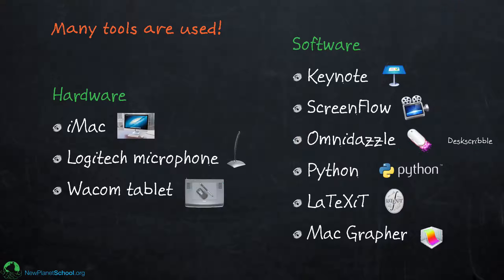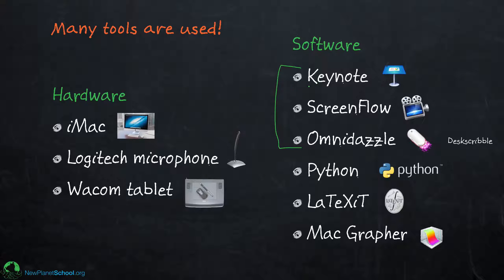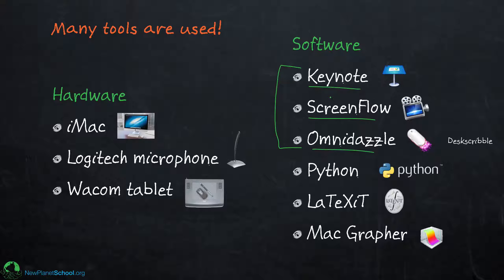Those three pieces of software form the core. They allow me to make a presentation, record and edit it, and write on the screen all simultaneously — they all have to run together. Then I use a bunch of other different types of software for different things.